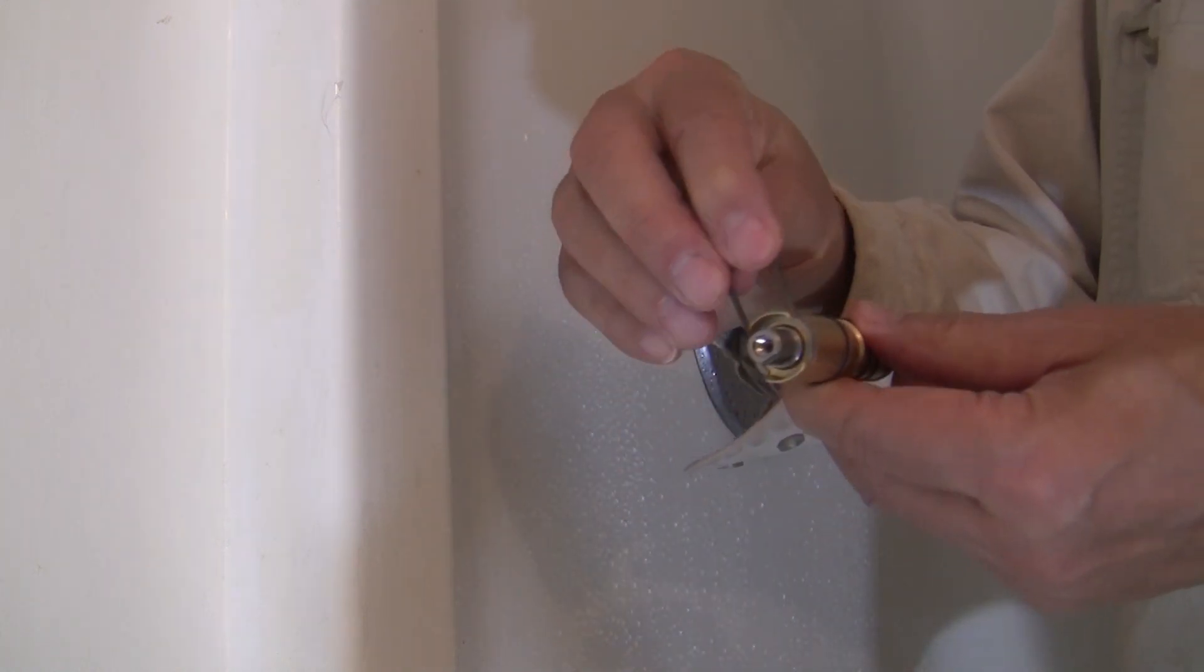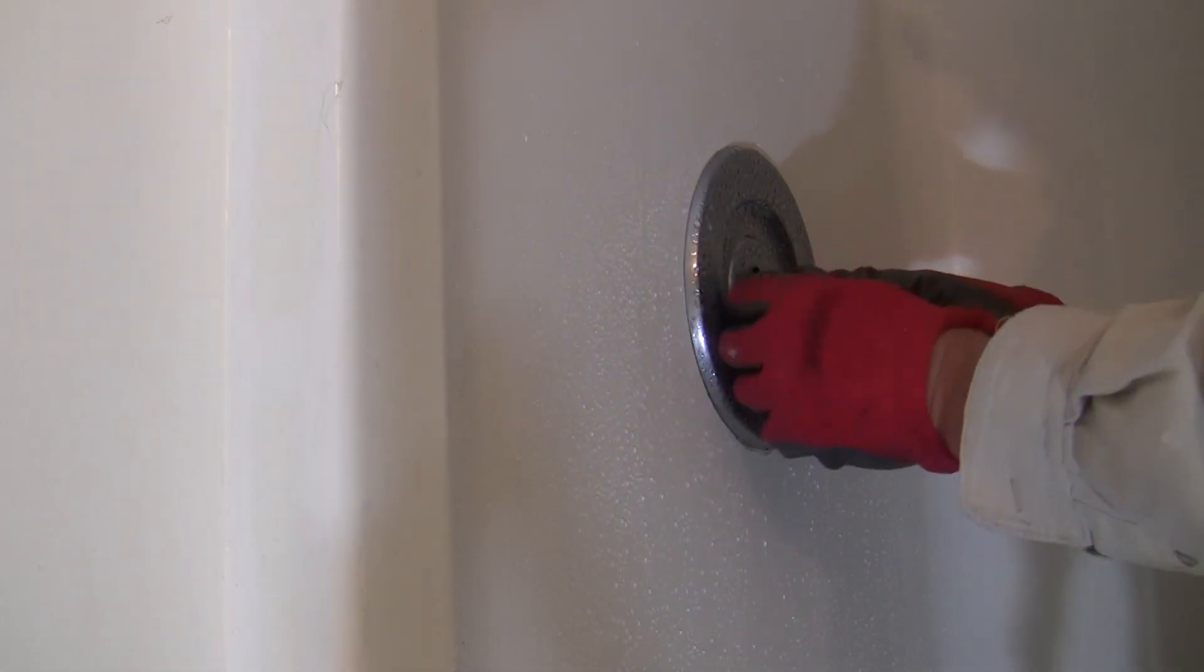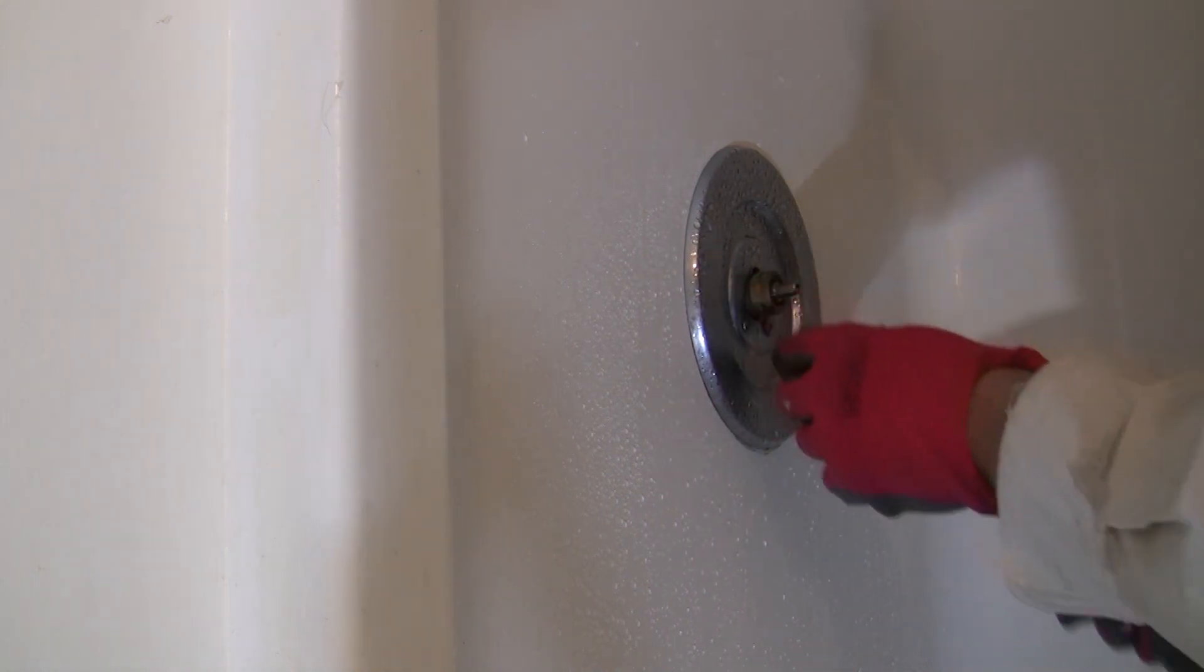The new cartridge will slide straight into the faucet body if you align the tab on the cartridge with the groove on the faucet body. Push the cartridge all the way, it will make it easy to put the retaining clip back.